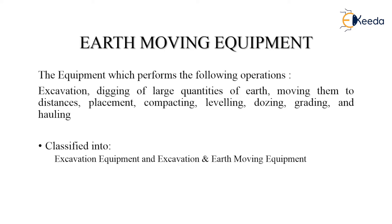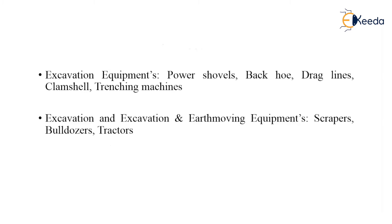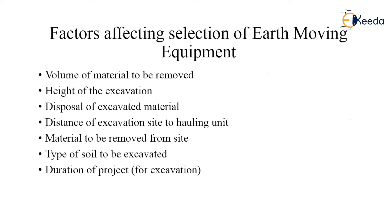Earth moving equipment is classified into two types: excavation equipment, and excavation and earth moving equipment. The excavation equipment includes power shovels, backhoe, draglines, clamshell, and trenching machines. In the excavation and earth moving equipment category, scrapers, bulldozers, and tractors are used.